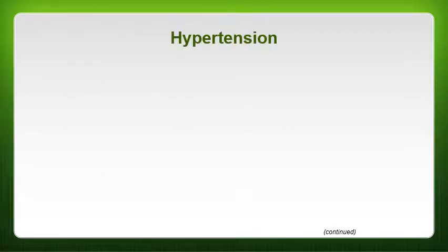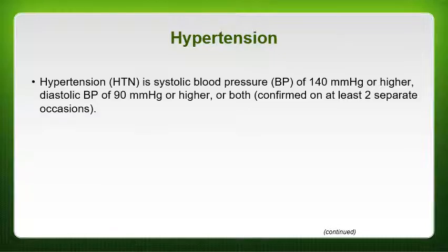Looking at our conditions, we start with hypertension. Hypertension is a systolic blood pressure of 140 or higher and a diastolic of 90 or higher, or both, confirmed on at least two separate occasions. So it's not a case where someone's blood pressure is a little elevated once and they get diagnosed — it has to be confirmed on at least two separate occasions.